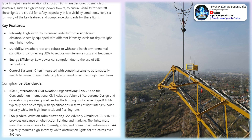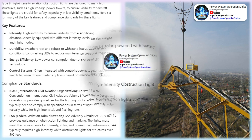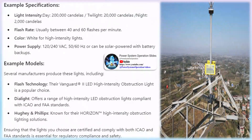Type B medium-intensity obstruction lighting produces red flashes with an effective light intensity of 2,000 candelas ±25%. It is used in buildings and facilities below 105 meters, or in conjunction with medium-intensity Type A and high-intensity A-type obstruction lights.